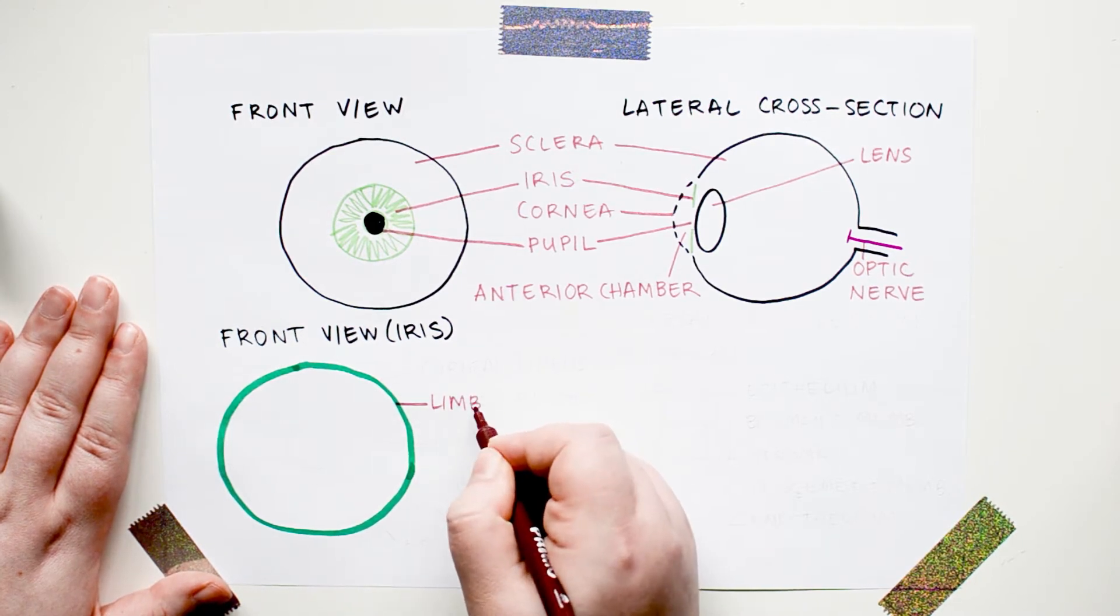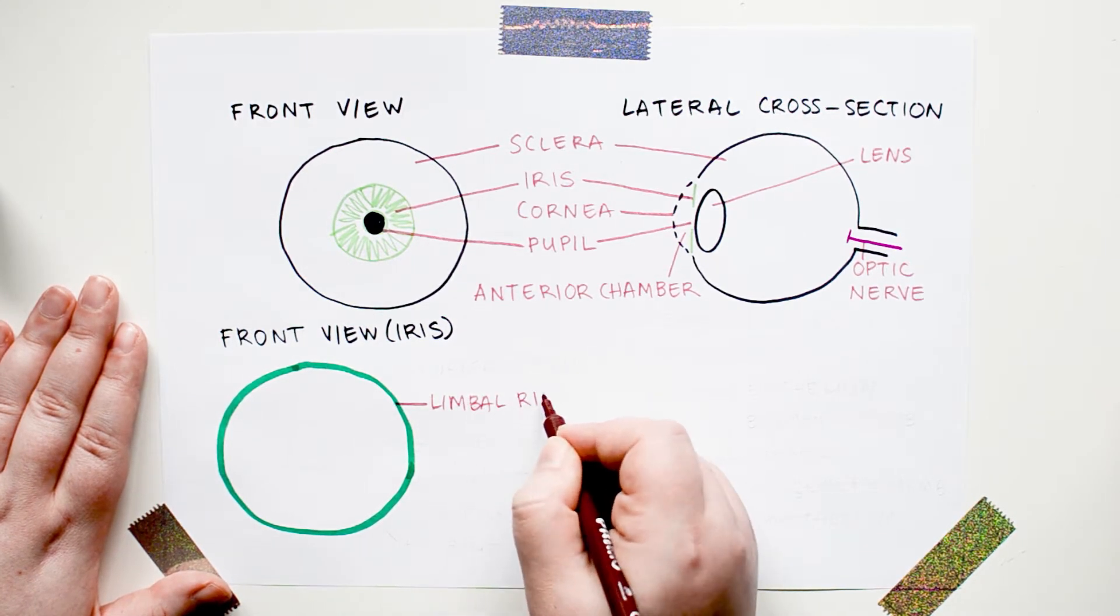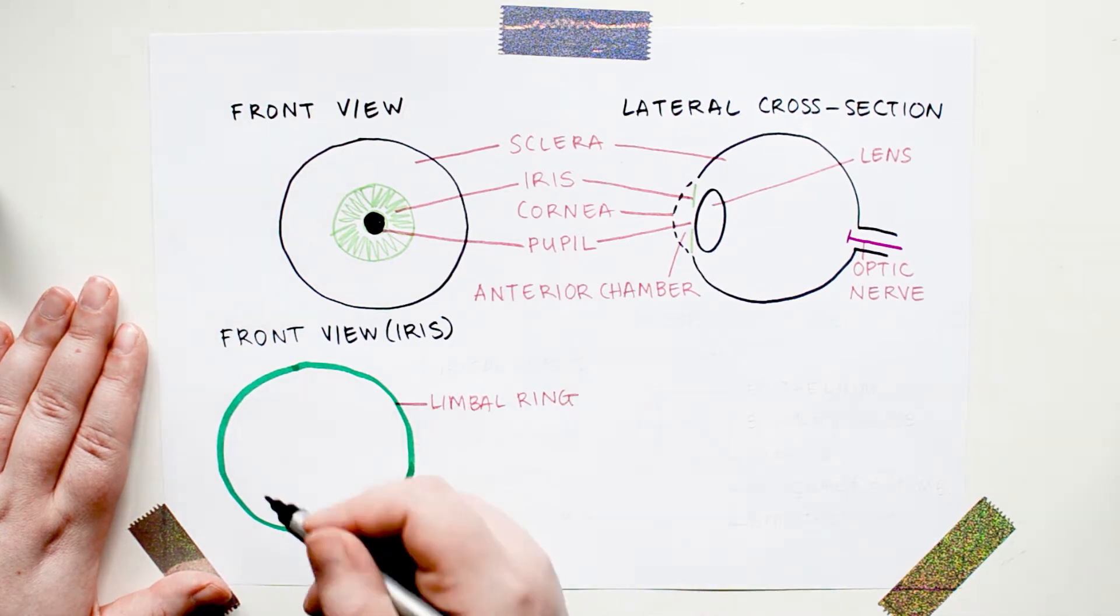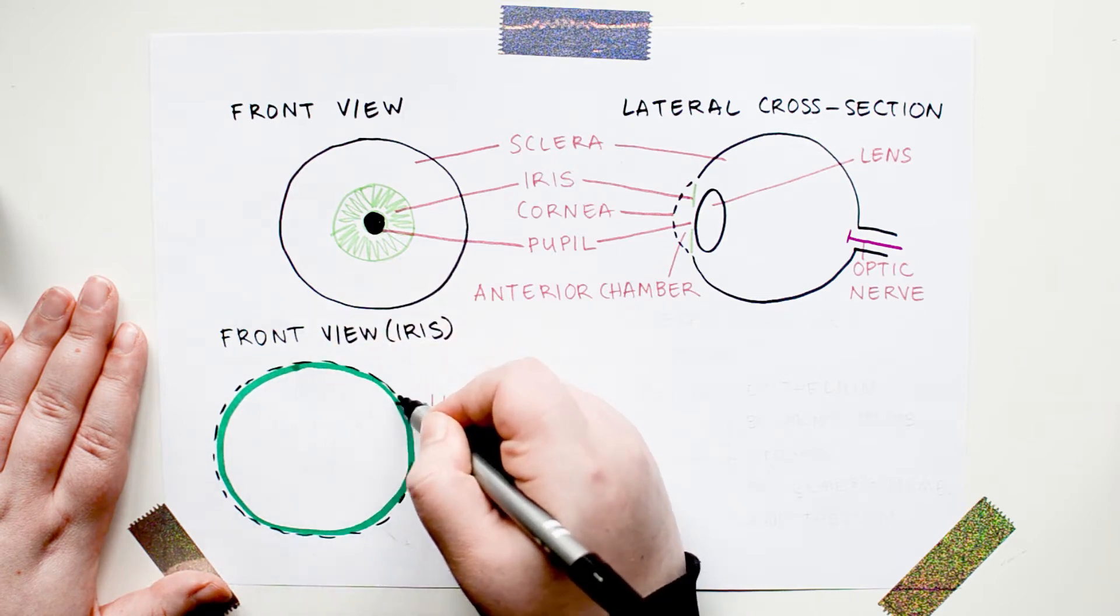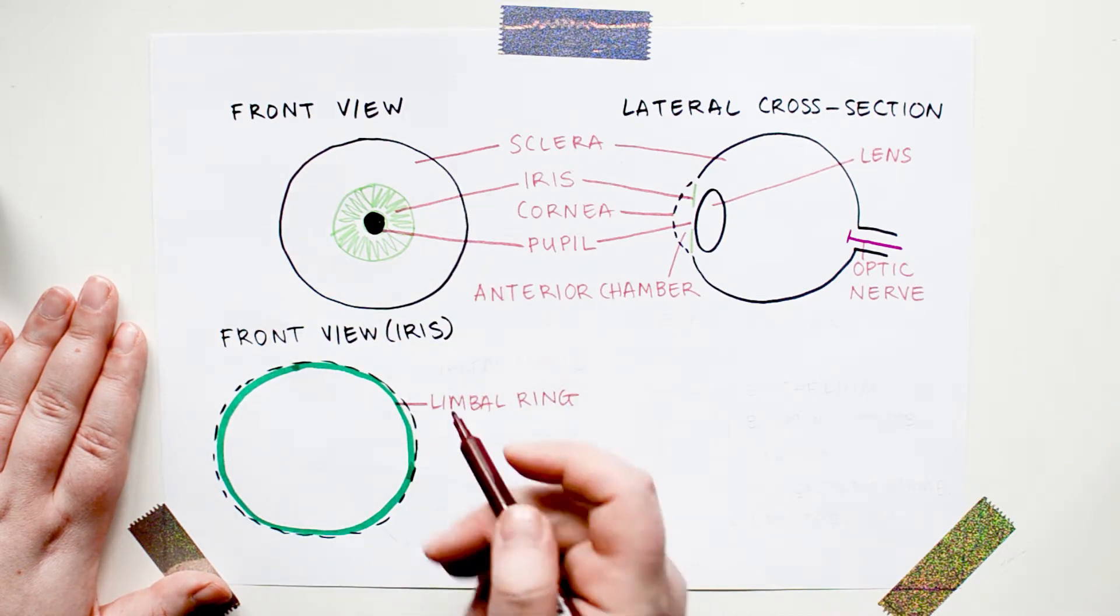Pretty much all eyes have a darker area around the edge of the iris. This is normal and it is called the limbal ring.